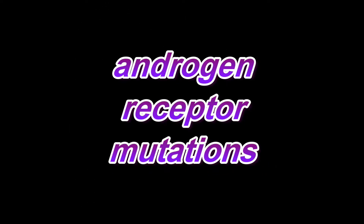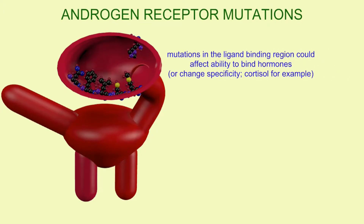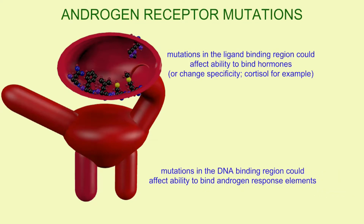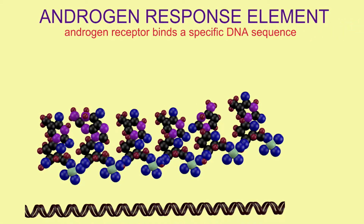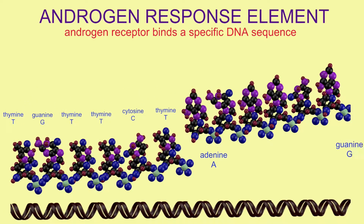Mutations can have diverse effects on androgen receptors. A mutation which affects the ligand binding region, where the hormones bind, could affect the ability to bind the hormone or its specificity. For example, one mutant could bind cortisol instead of androgen to be activated.